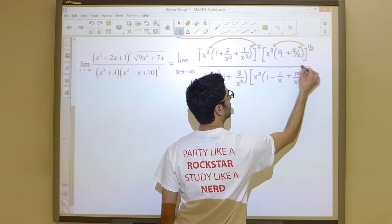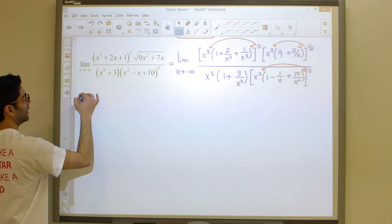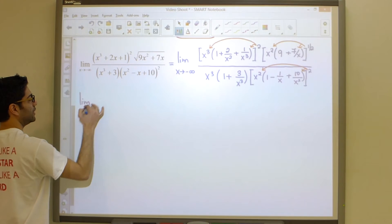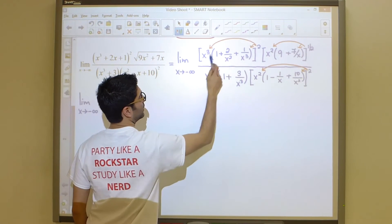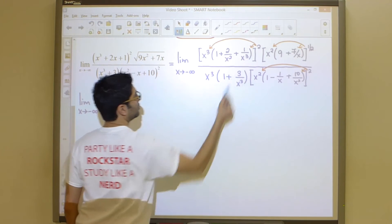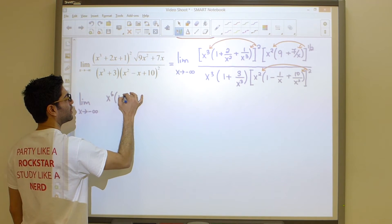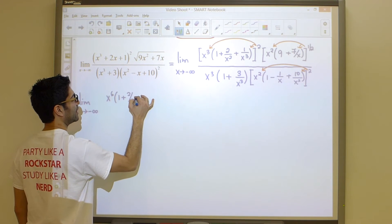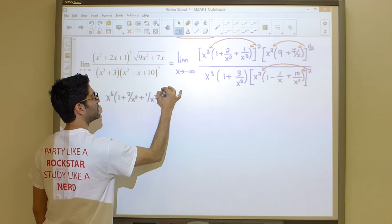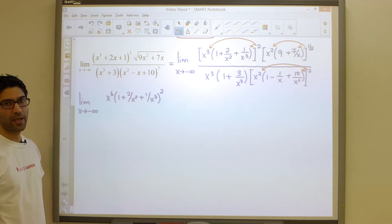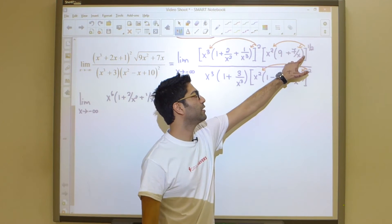Right there, right there, and right there. So if we start doing this, here's what I am left with: limit as x goes to negative infinity. Now if I take 2 and I raise x cubed to the power of 2, that leaves me with x to the power of 6. For the second bracket there, I'm going to leave it exactly as it is, and I'll leave that 2 right there.